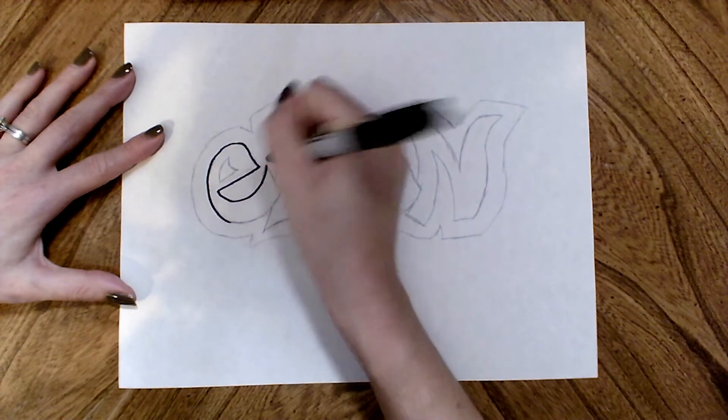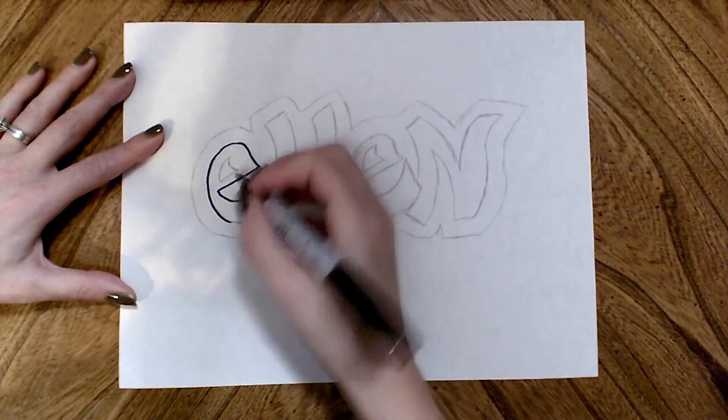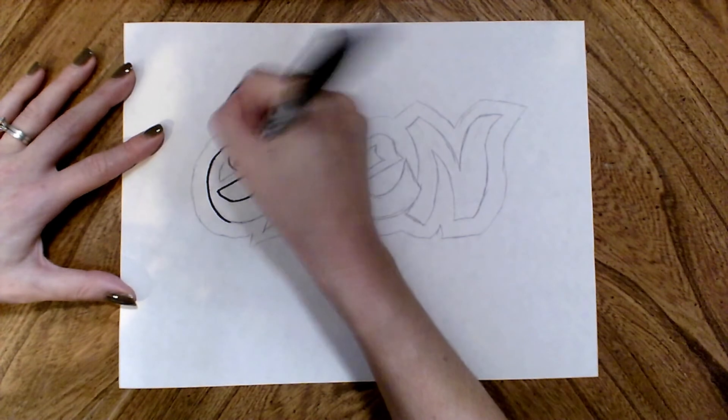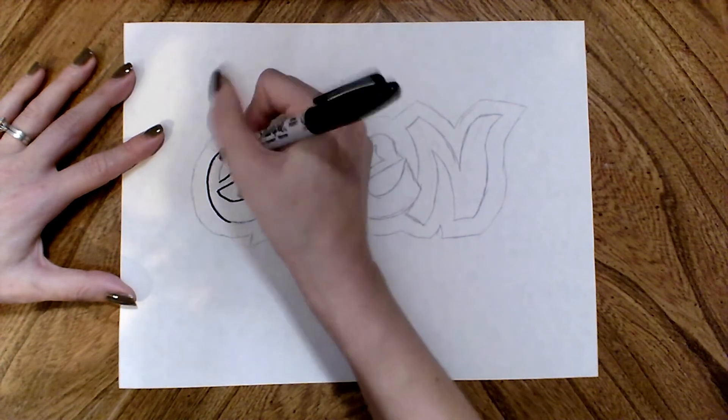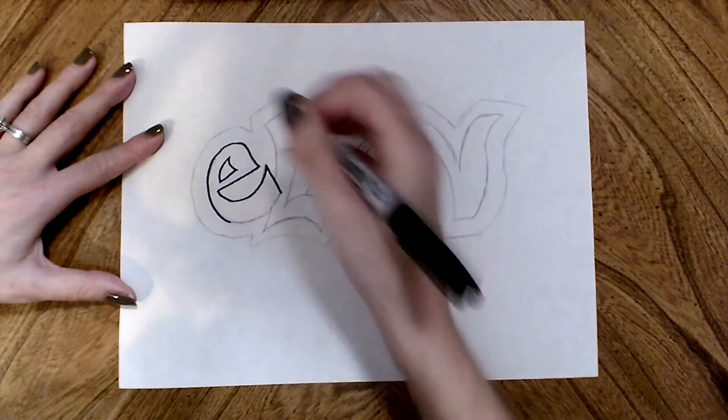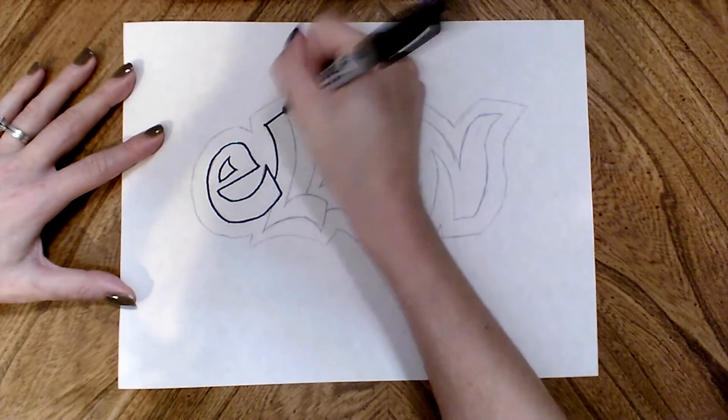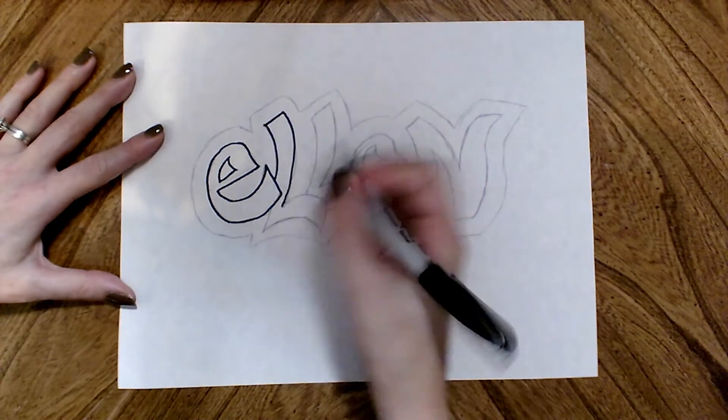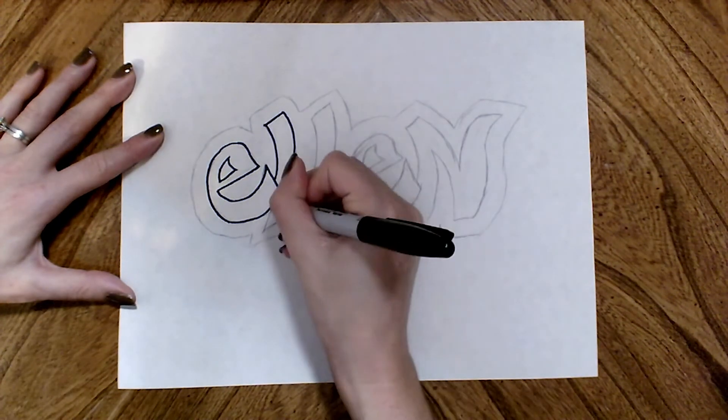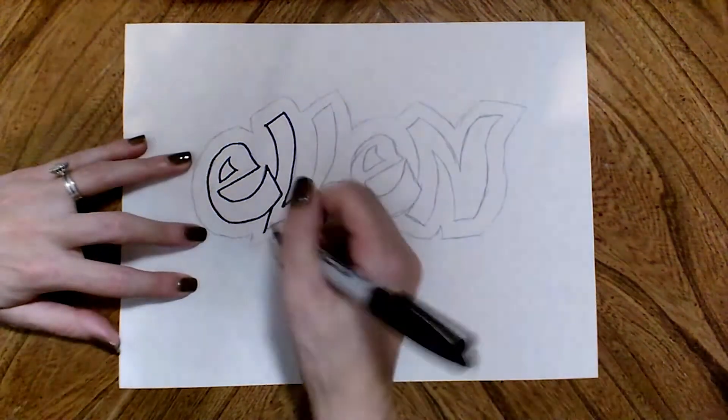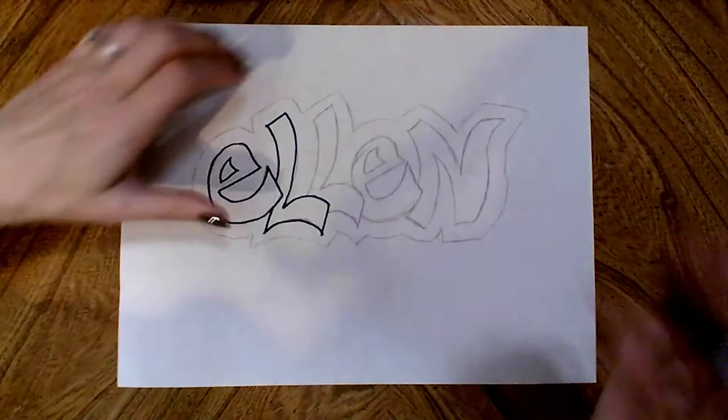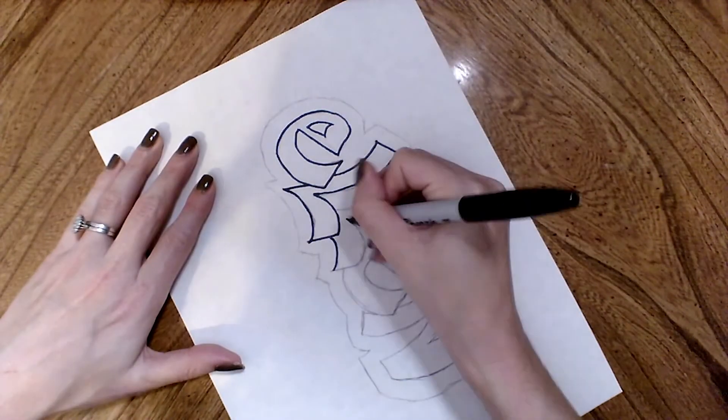Any marker will work. I'm just going to go through and trace over these lines to make them nice and clean and bold. Turning the paper helps me get all of the angles neatly.